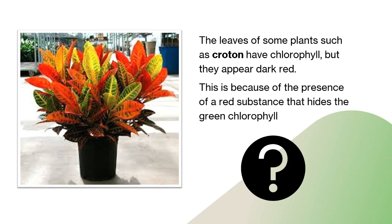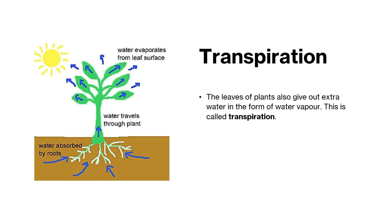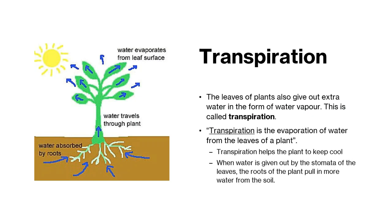Good. Now, let's learn about something we call transpiration. The leaves of plants also give out extra water in the form of water vapour. This is called transpiration. Transpiration is the evaporation of water from the leaves of the plant. Transpiration helps the plant to keep cool. When water is given out by the stomata of the leaves, the roots of the plant pull in more water from the soil.